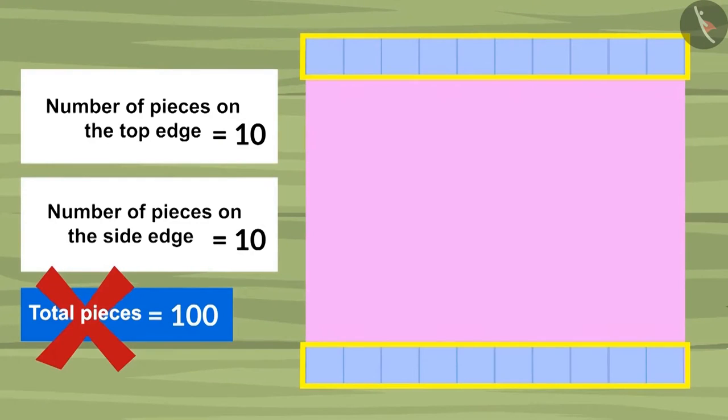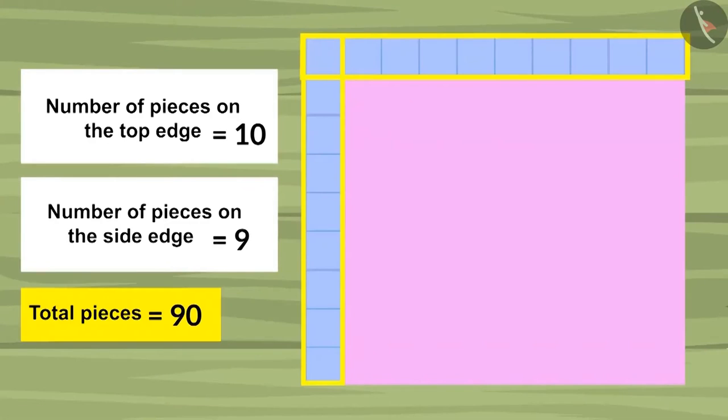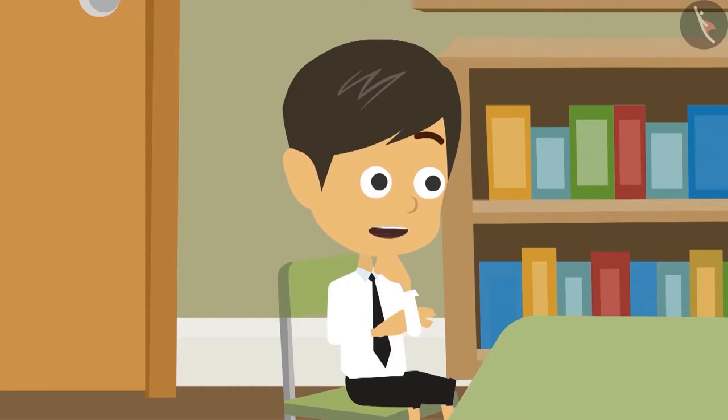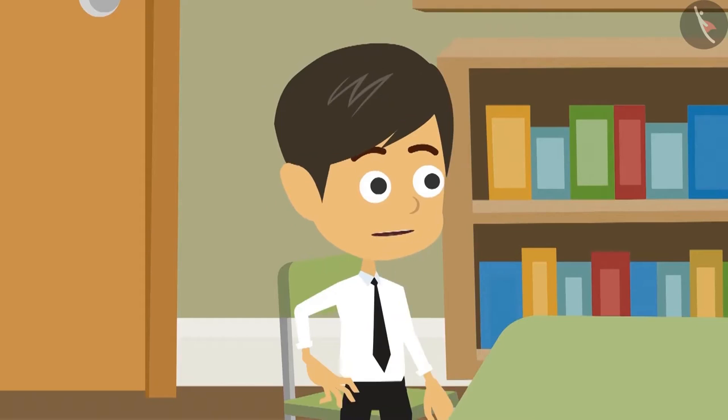First answer was coming to be hundred pieces. Now the answer coming ninety pieces. And this is the correct answer. So a total of ninety pieces will be required to cover this paper. Oh, now I get it. This method is much better.